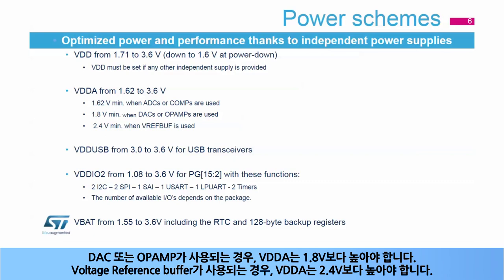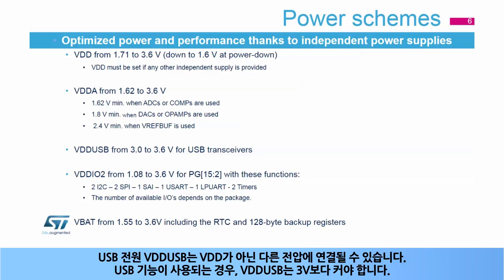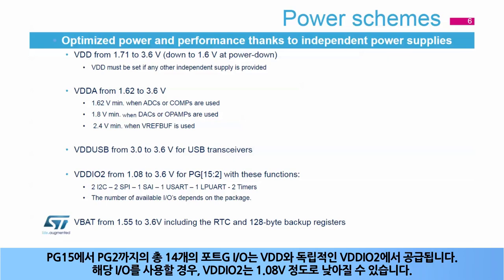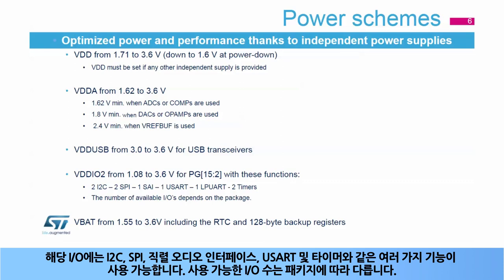When DACs or operational amplifiers are used, VDDA must be greater than 1.8 volts. When the voltage reference buffer is used, VDDA must be greater than 2.4 volts. The USB power supply VDD-USB can be connected to any voltage other than VDD. When USB is used, VDD-USB must be greater than 3 volts. The 14 I/Os of port G, from PG-15 to PG-2, are supplied by VDD-IO2 independently from VDD. When these I/Os are used, VDD-IO2 can be as low as 1.08 volts. Several functions are available on these I/Os: I2C, SPI, Serial Audio Interface, USART, and Timers. The number of available I/Os depends on the package.